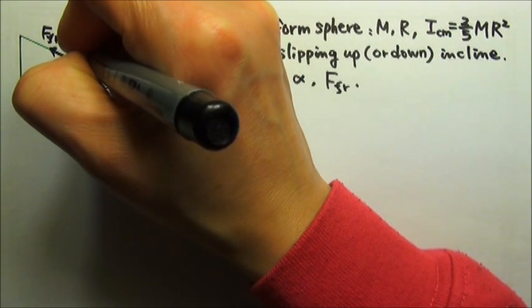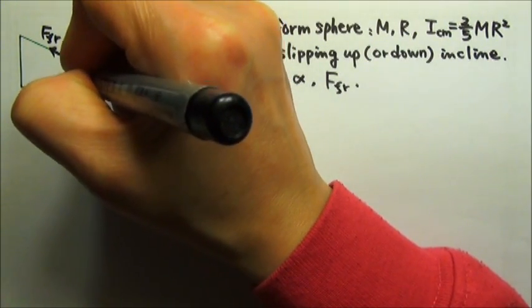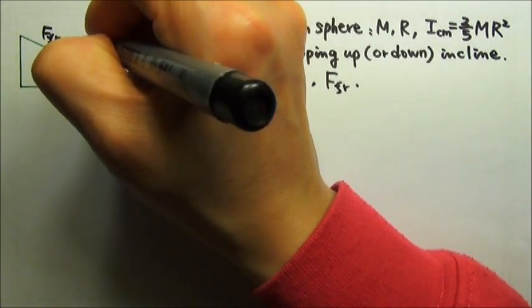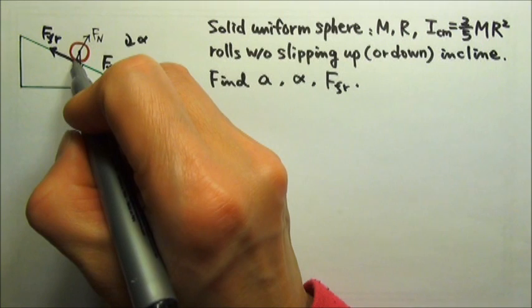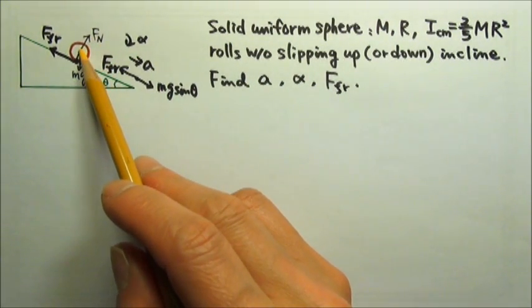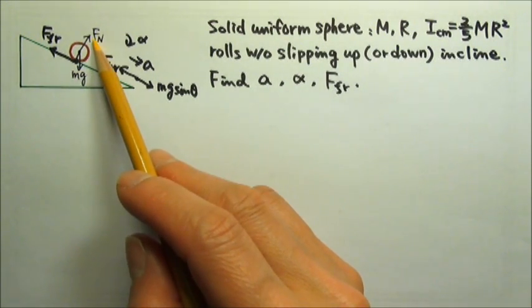If you would like to, you can draw the other two forces over here as well: the mg at the center of mass, the normal force perpendicular to the contact surface, and the x on the contact point. These two both go through the axis, so they do not provide any torque.